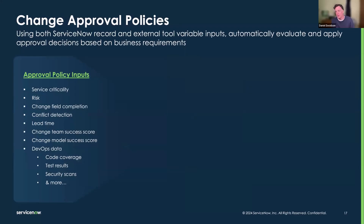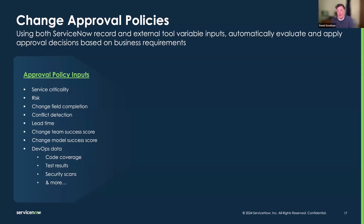What do we use change approval policies for? Traditionally, we looked at the change to see whether it's high, medium, or low risk — either a manual step by a change manager, or using questionnaires that set the change based on answers, or risk conditions that look at the data on the change. But rather than just looking at high, medium, or low risk and sending to CAB if it's high, or allowing through with manager approval if it's low, we can actually examine the things that make up the risk from within the approval policy.